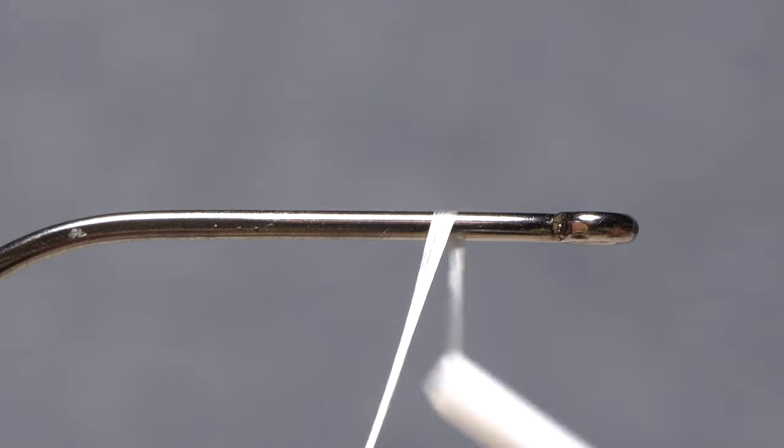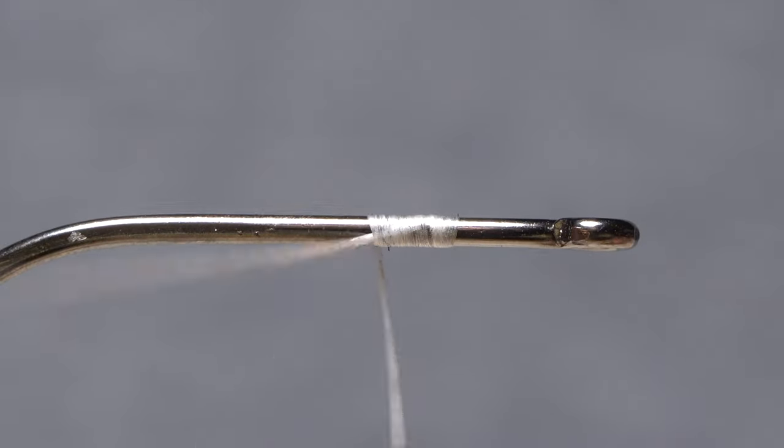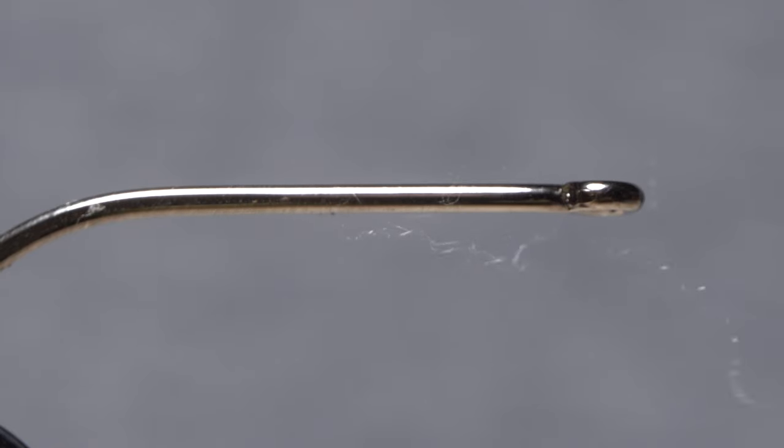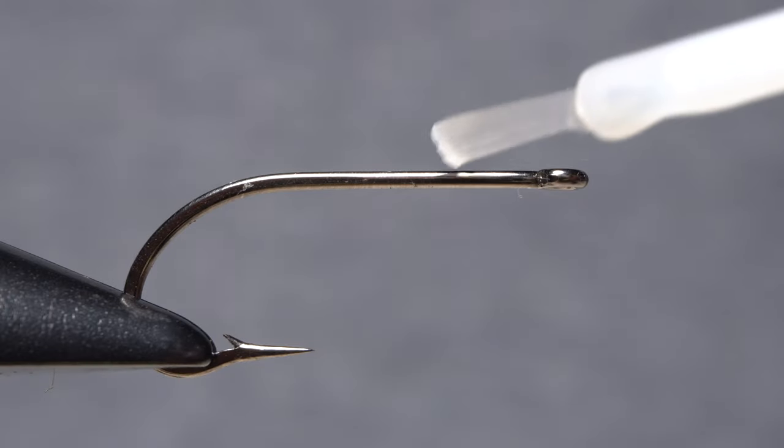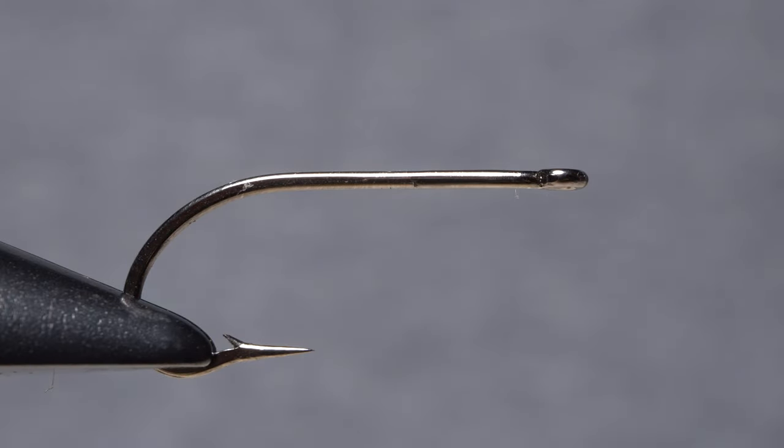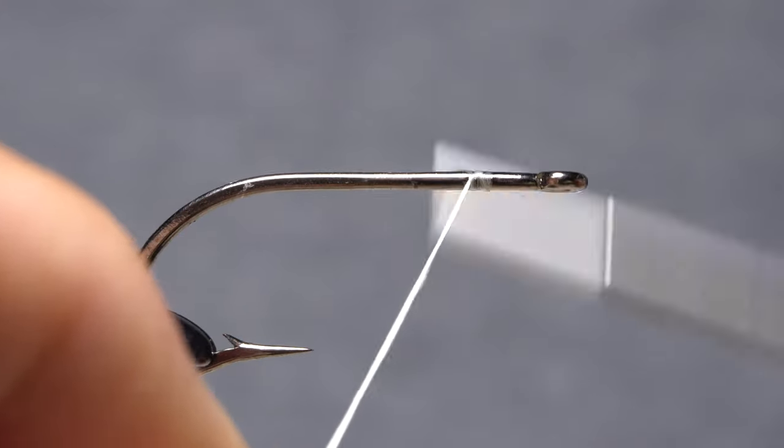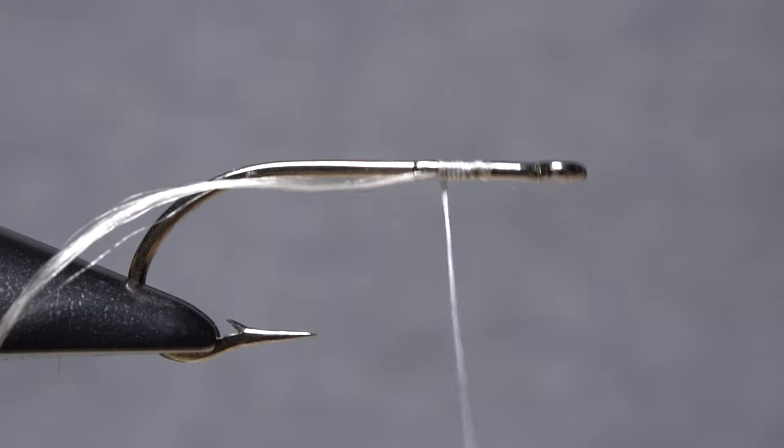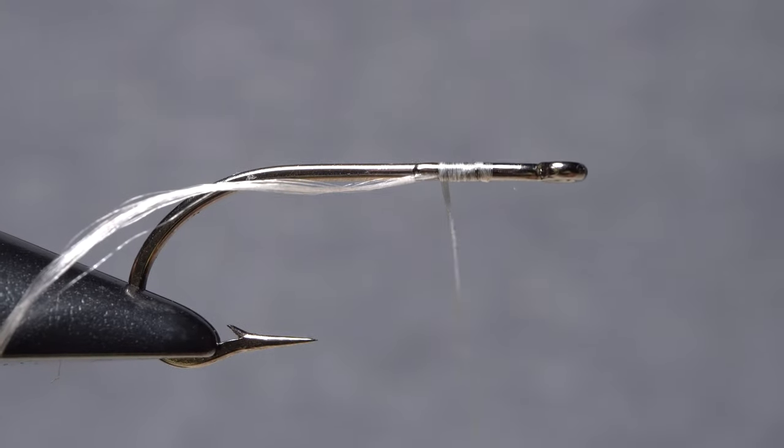Gel spun is also very slippery, and just getting it started on a smooth hook shank can be problematic because the wraps spin so easily. The cure for this is to apply a small amount of superglue to the shank prior to initial tie-in. Pressure from the thread will set the adhesive, which will prevent the wraps from spinning and coming undone.